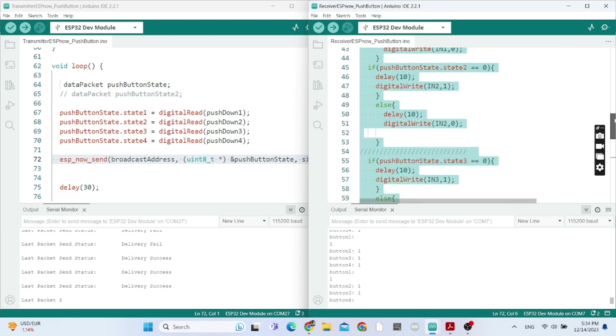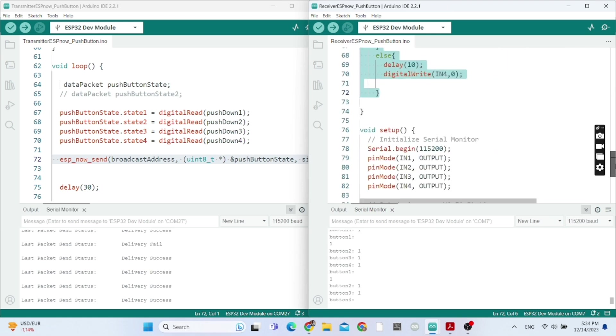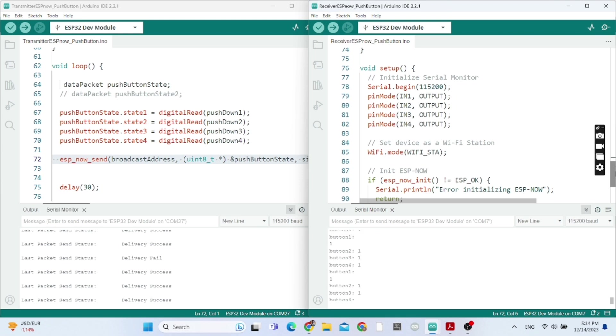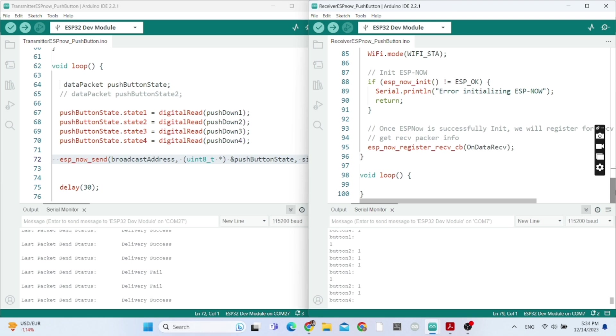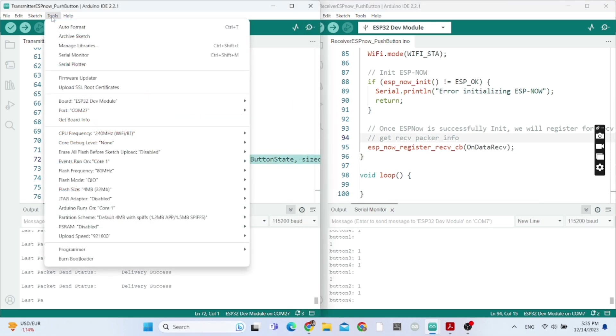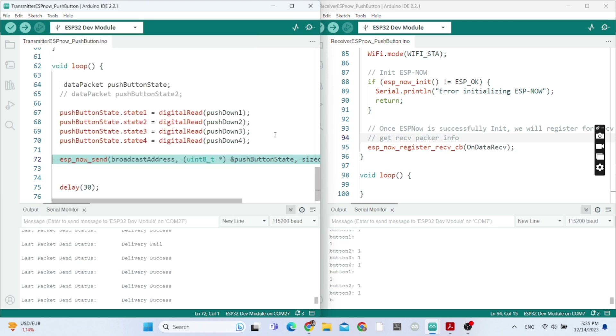So here, we are controlling the robot with the if statement. When the state is zero, the robot moves. When the state equals zero, and here we are calling the on data receive function. You're going to understand that when you download the code.